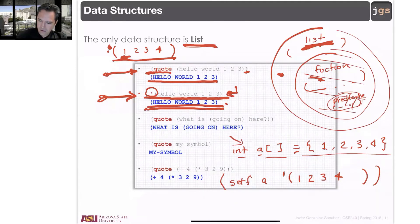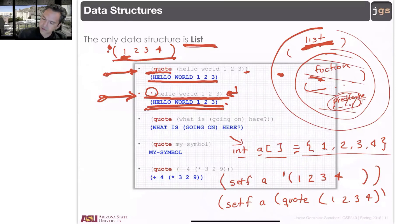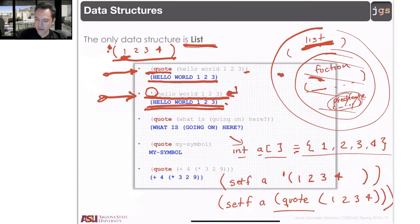You can do this with the apostrophe, or if you do not like the apostrophe, you can use setf A and then open parenthesis, quote, open parenthesis, one, two, three, four, close parenthesis for the list, close parenthesis for the quote, close parenthesis for the setf. So I use the quote function instead of the single apostrophe.